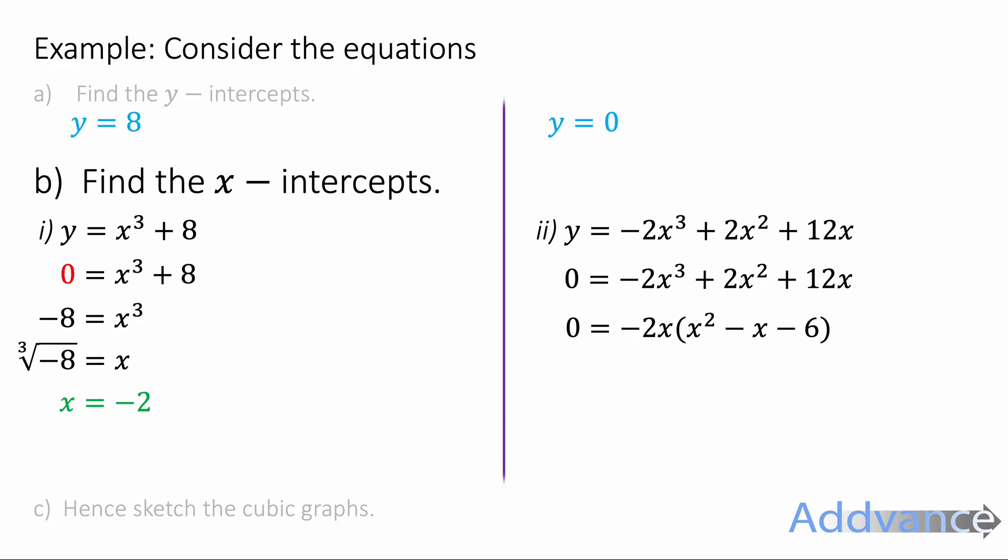Now we've got a quadratic in the bracket. And so we can factorize that quadratic. That quadratic factorizes to -2x × (x - 3) × (x + 2). That's quite tricky. But the key thing here is that to factorize a cubic, you can sometimes just factorize an x out of the cubic. And that gives you a quadratic. And then you know how to factorize quadratics.